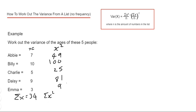So Σx² then can be found by adding these numbers up that we've just worked out. So 49, add 100, add 25, add 81, add 9, is 264.